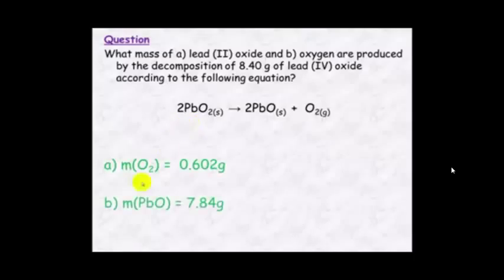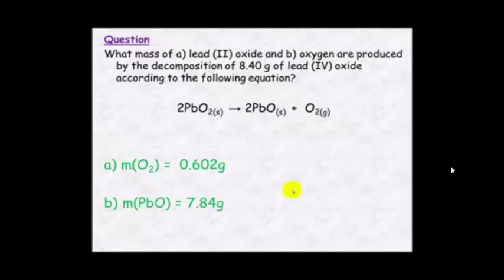Hopefully you got an answer of 0.602 grams for the mass of oxygen and 7.84 grams for the mass of lead oxide. If you got that right, well done — you don't have to watch any more. If you didn't, or you just want to go through another example, I'll go through it step by step.